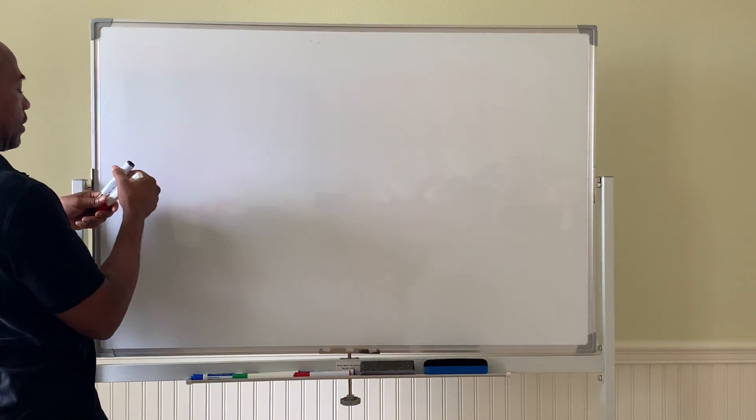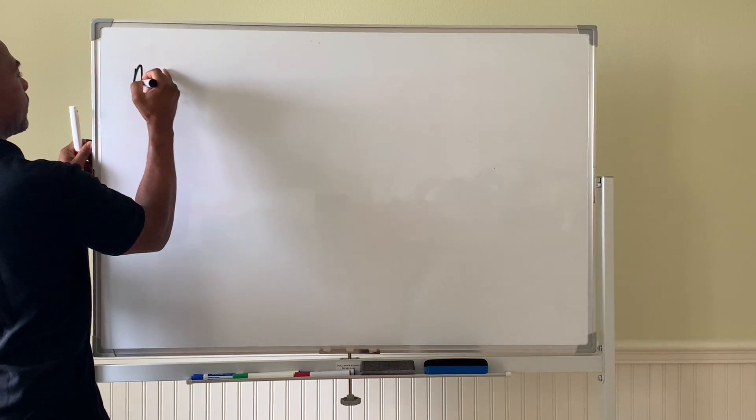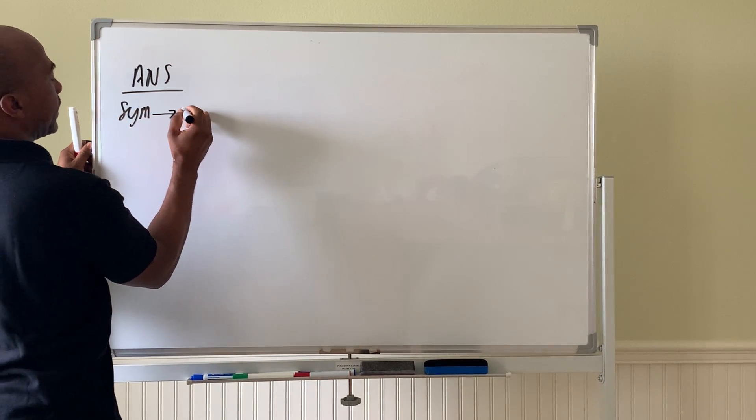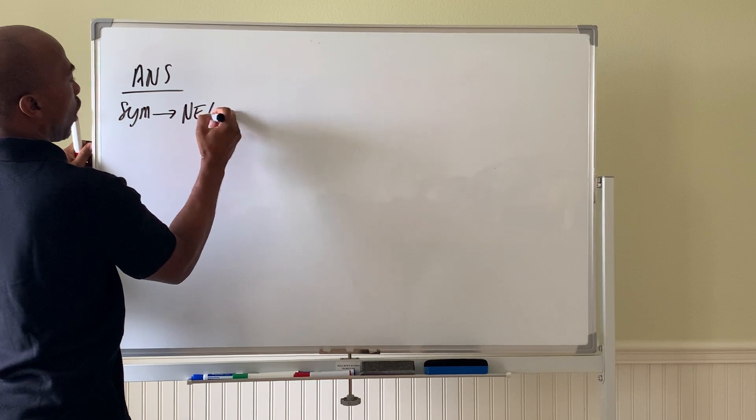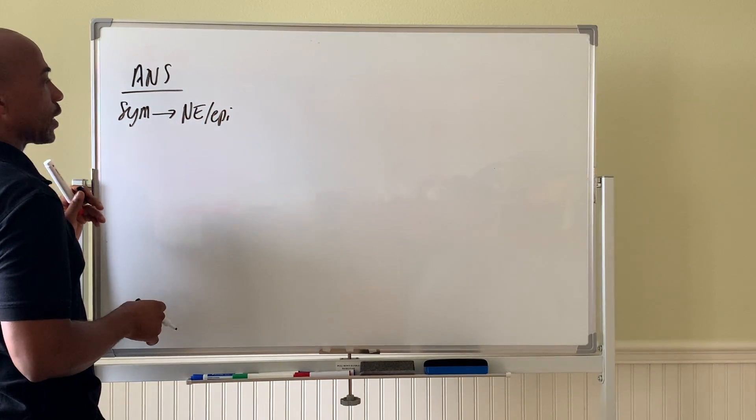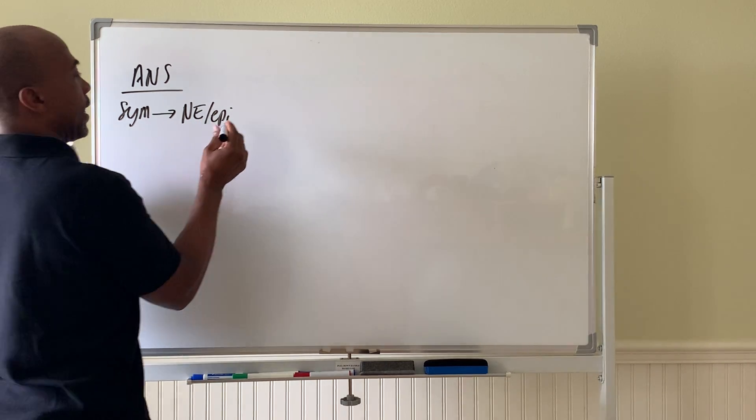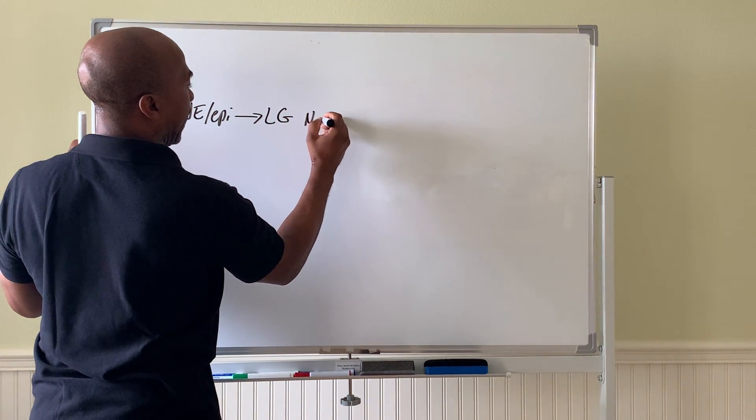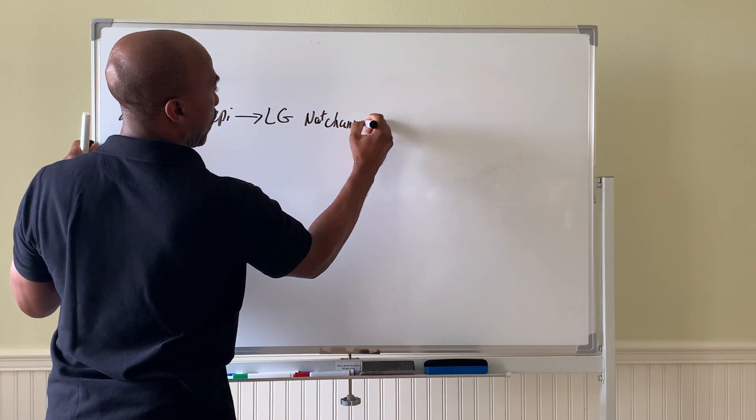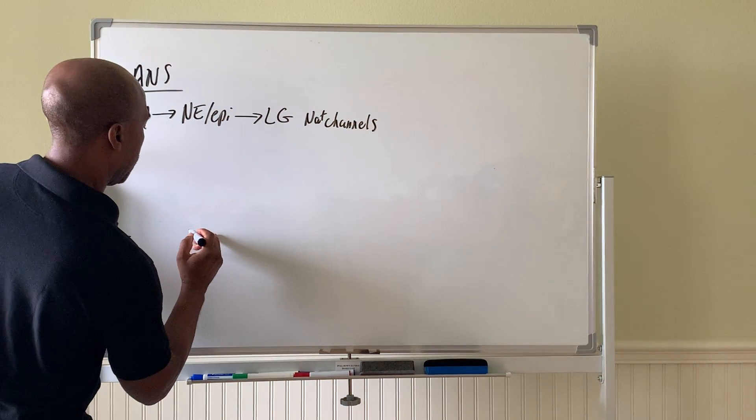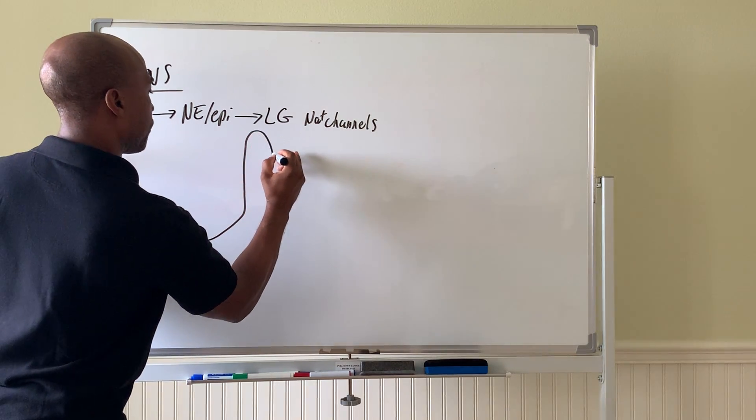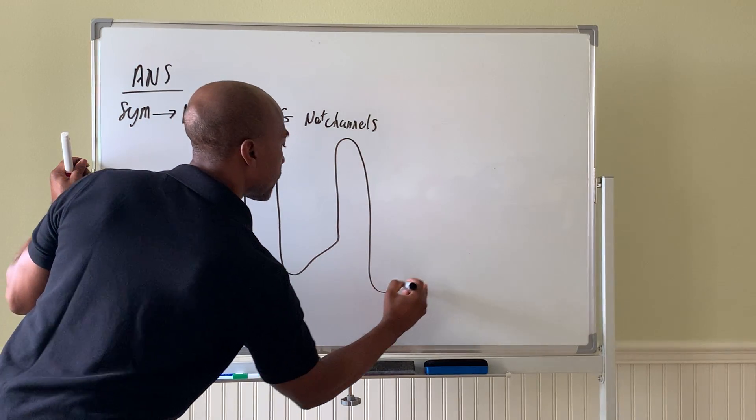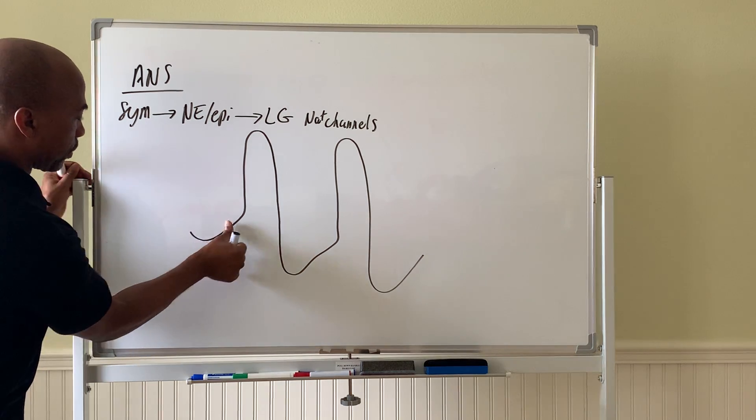So let's first look at how the sympathetic works. ANS system, your sympathetic nervous system, will release norepinephrine or even epinephrine at their second neuron. The post-ganglionic neuron will release these chemicals. And then these chemicals will open up ligand-gated Na⁺ channels. Let me show you how that works. So here is a typical action potential of your pacemaker cells.